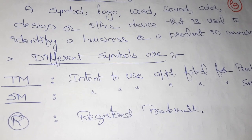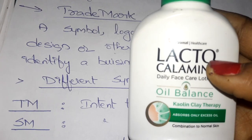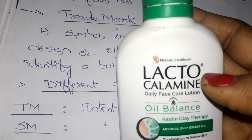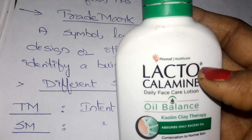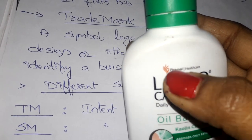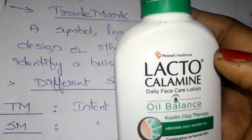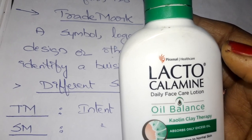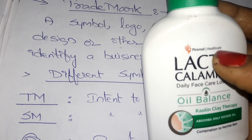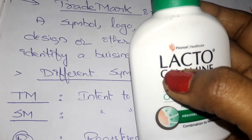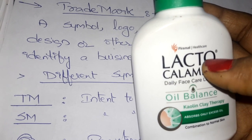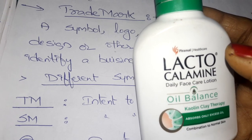For the registered trademark, if you see the R in a circle on a product, it means that this product has a registered trademark. This same symbol or logo cannot be used by other products. So this is the registered trademark — it may be a symbol, word, logo, or design.